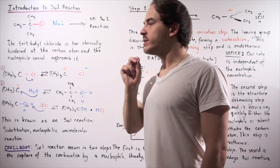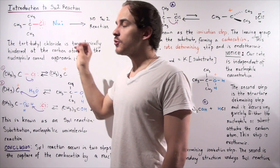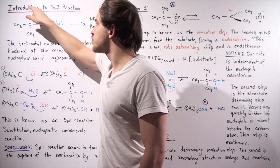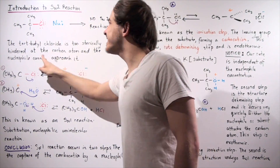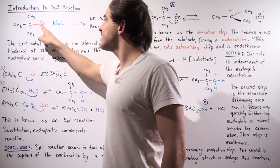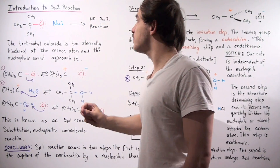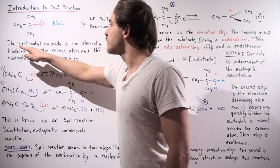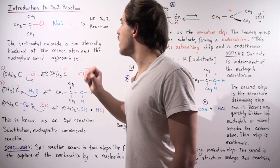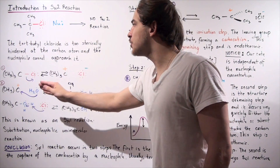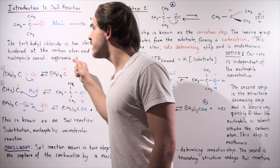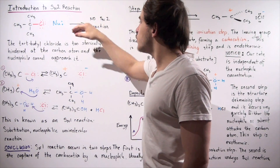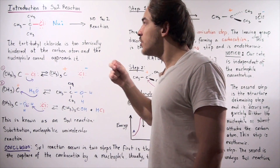Recall that whenever we have a tertiary substrate — in other words, when this carbon is attached to three methyl groups — our nucleophile will not be able to reach this carbon because it is too sterically hindered. That means no SN2 reaction will take place. Tert-butyl chloride, as shown, is too sterically hindered at the carbon atom, and the nucleophile cannot find a pathway for the SN2 reaction.